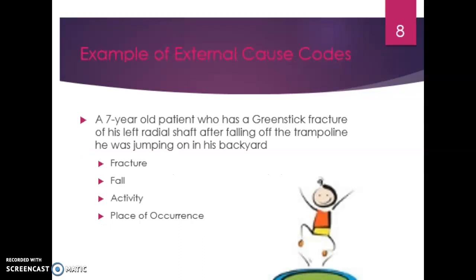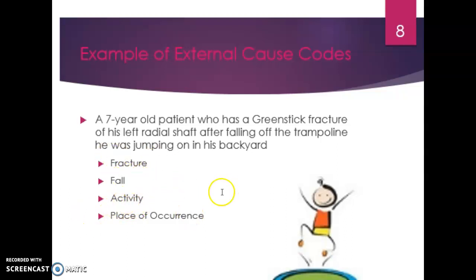Here's an example of external cause codes. A seven-year-old patient has a greenstick fracture of his left radial shaft after falling off a trampoline he was jumping on in his backyard. We have our first code for the actual injury — the fracture — since we can never have the external cause code first. Then we code how that fracture happened — it was from a fall. Then the activity, which is trampolining, and then the place of occurrence where this happened. The fracture comes from the regular index; fall, activity, and place of occurrence all come from our external cause index.